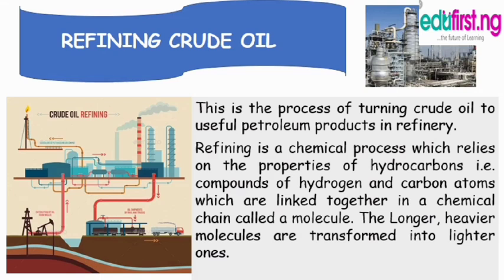Refining crude oil: To refine means to make it purer. This is the process of turning crude oil into useful petroleum products in a refinery. Refining is a chemical process which relies on the properties of hydrocarbons — that is, compounds of hydrogen and carbon atoms linked together in a chemical chain called a molecule. The longer and heavier molecules are transformed into lighter ones, and vice versa.